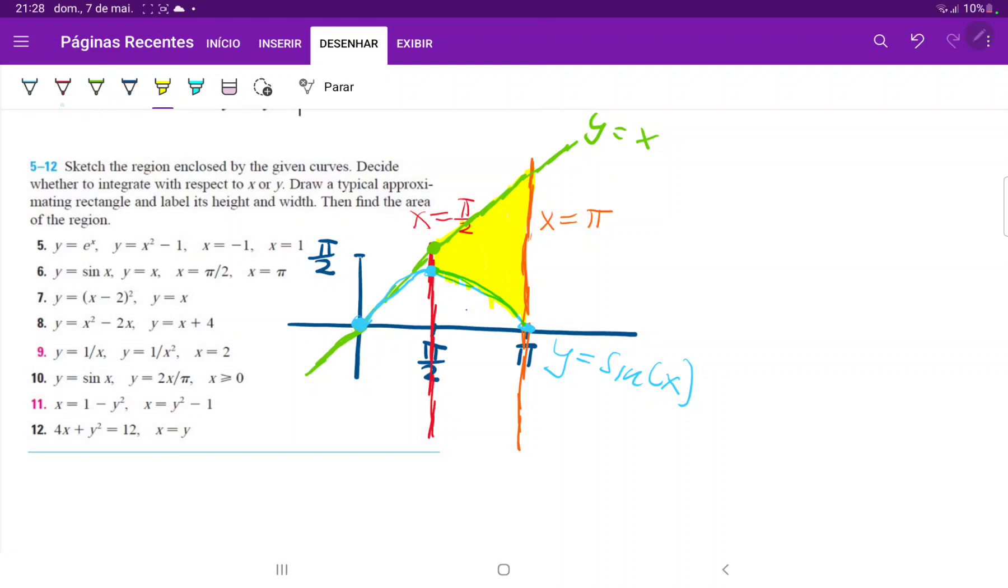So if I do horizontal rectangles like this, you can see that through different points we will have always the same upper boundary, which is the line x equals pi, but for the lower boundary it's changing. In the first part it's sine x, in the second part is x equals pi over 2, and in the third part is y equals x. So this is not too easy because we would have to break it down into three separate integrals. That would be a lot of work.